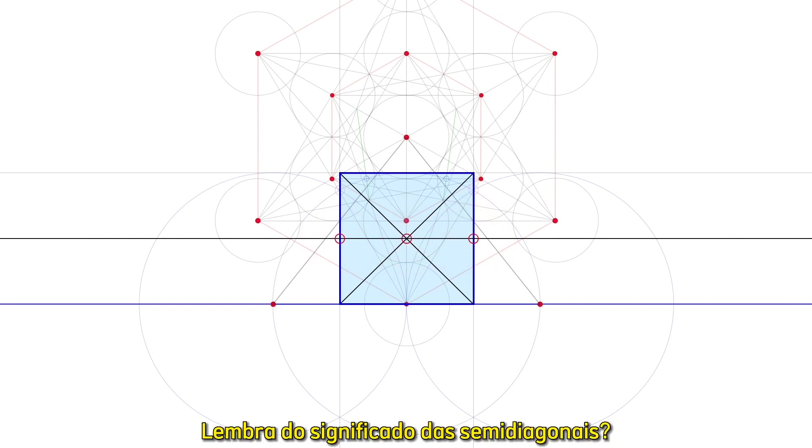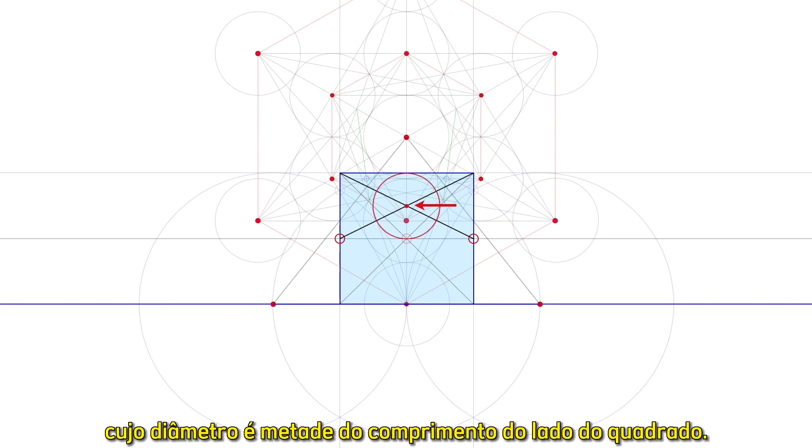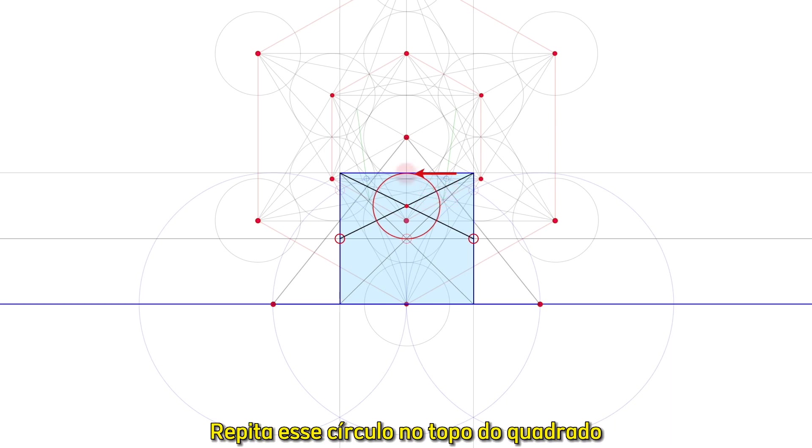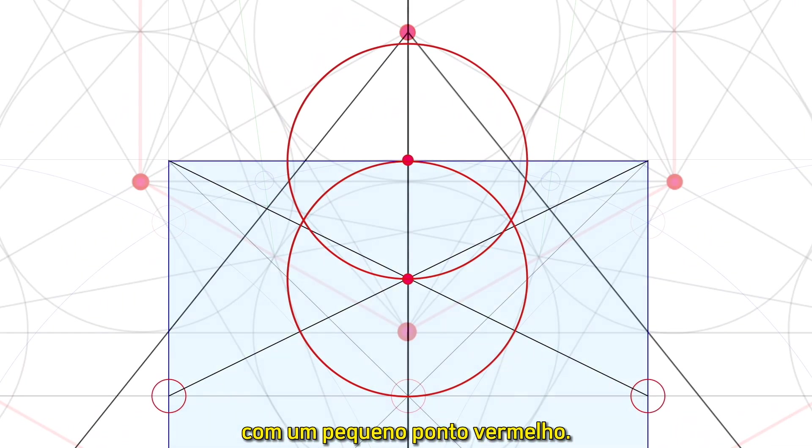Remember the significance of the half diagonals? We draw two of those to find the center of the half square and inscribe a circle whose diameter is half of the square's side length. Repeat that circle at the top of the square and mark where it crosses the center vertical with a small red dot.